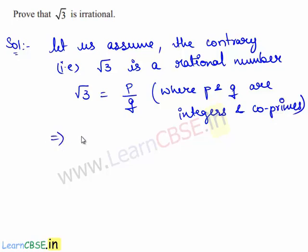This can be written as p is equal to root 3 times q. Now we shall square this on both sides. This gives p square is equal to 3q square. Let this be equation 1. This can be written as p square by 3 is equal to q square.